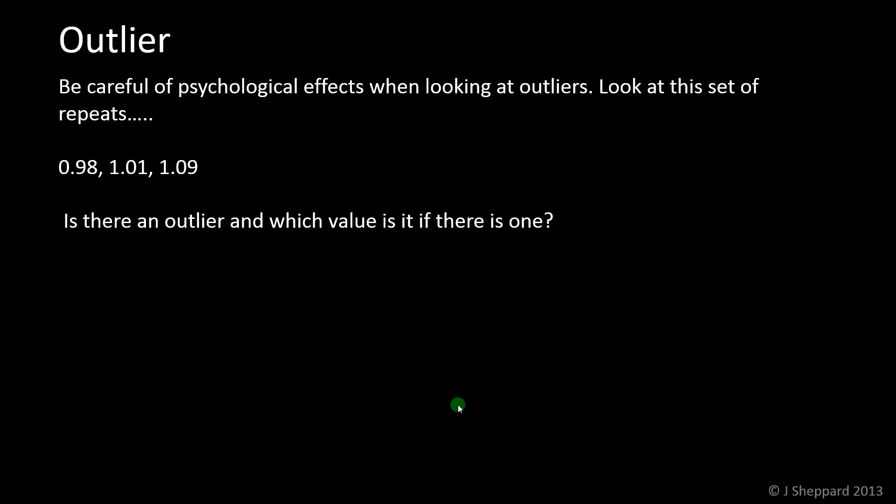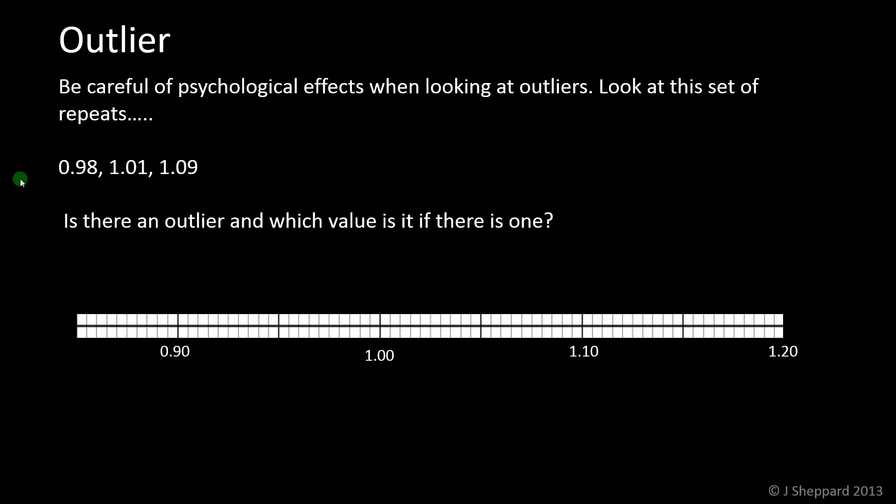Be really careful. There are psychological effects that can come into play when you're trying to identify outliers. Here's an example. Three repeats: 0.98, 1.01, 1.09. If there's an outlier, which one is it? A lot of people will say 0.98. There's a big psychological impact of not having that 1 at the front. That one looks like it doesn't fit. But what we care about for identifying outliers is just how close together the results are. One way to deal with this is to plot them on a number line so you can see how far apart they are. It's clear that even though this first result, the 0.98, starts with a 0, it's actually the 1.09 that's much further away. It's a very common mistake that people tend to identify outliers based on this psychological impact.